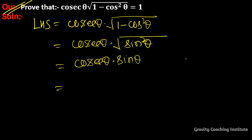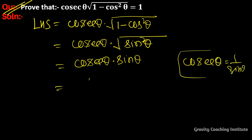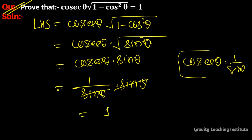We know that cosec theta equals one upon sine theta, so we have one upon sine theta into sine theta. The sine theta cancels, giving us one, which equals RHS. Hence proved.